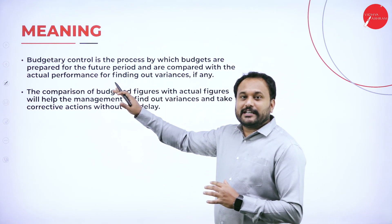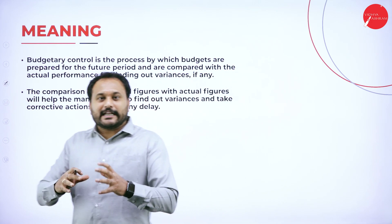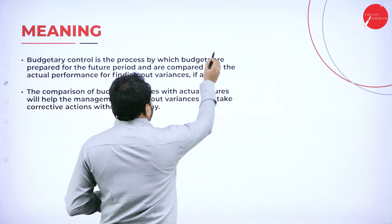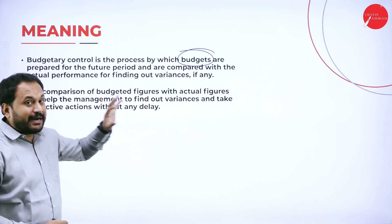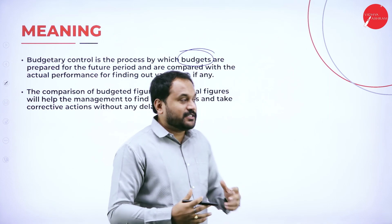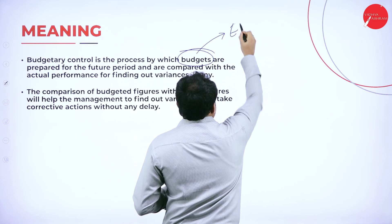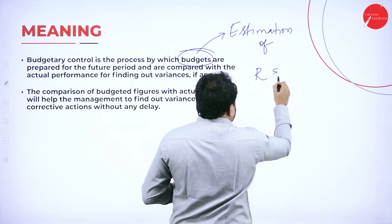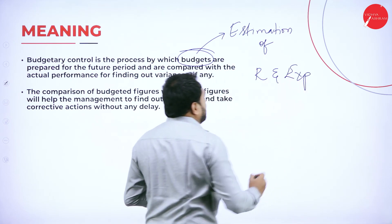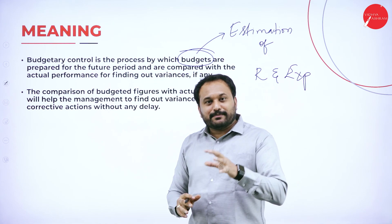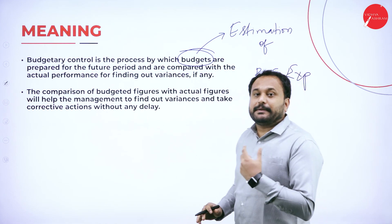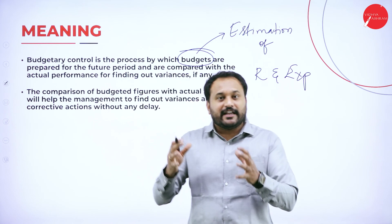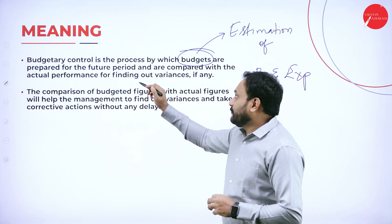Budgetary control is a process by which budgets are prepared. Now, what exactly is a budget? Budget means it is all about estimation — estimation of revenues and expenses. That is what the budget is all about. Budgetary control is a process by which budgets are prepared, where revenues and expenses are each taken into consideration and estimated for the future period.